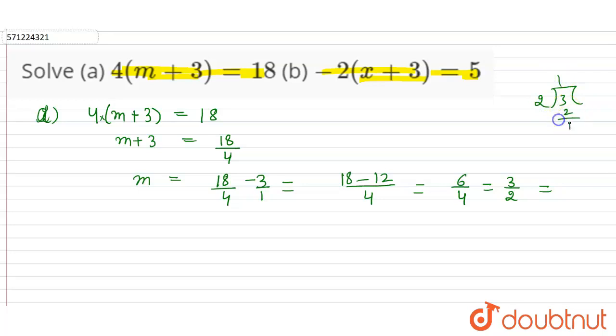So 2 into 1 is 2, 1 is the remainder, then decimal because 1 is less than 2. So 0 and 2 into 5 is 10. So 1.5. The value of m is 1.5.